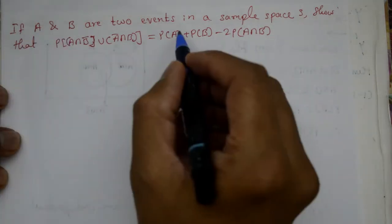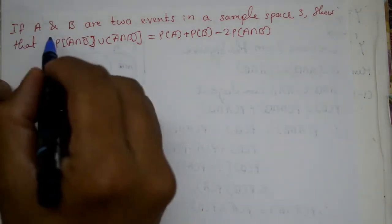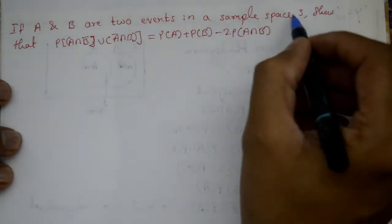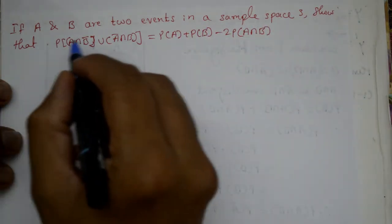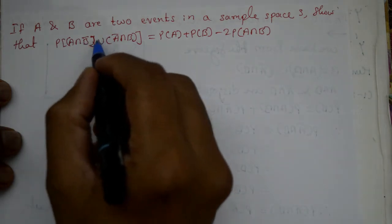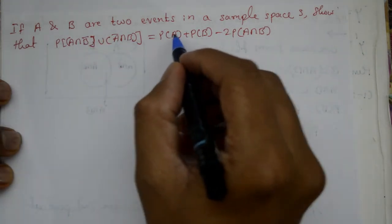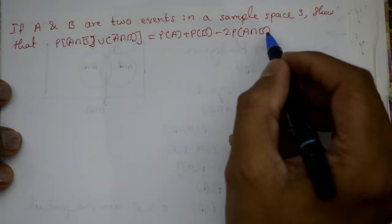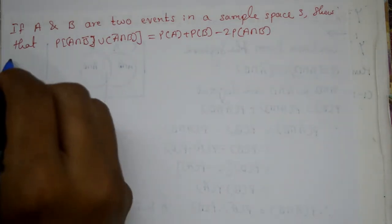Welcome students. Is probability problem ko hum solve karenge. If A and B are two events in a sample space S, then show that probability of A intersection B bar union A bar intersection B equal to probability of A plus probability of B minus 2 times probability of A intersection B.